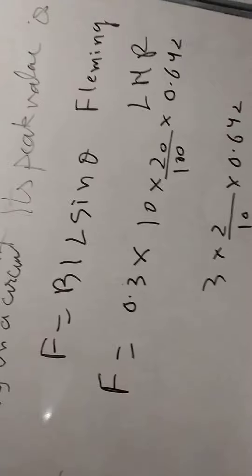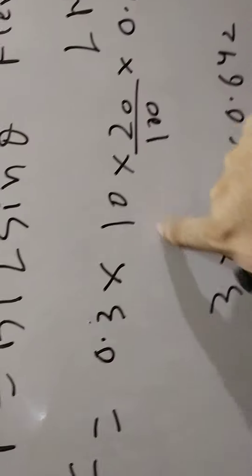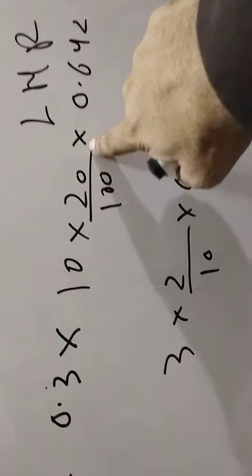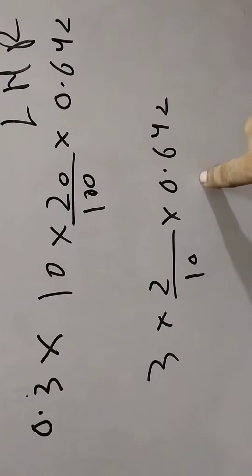Aur bacho, zara dhyan se dekho. 0.3 ko 10 se multiply karo yeh toh 3 ho jayega. 20 aur 100 mein ek 0 cancel, 0.64.